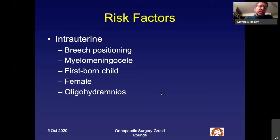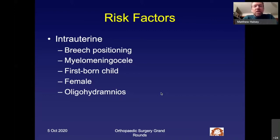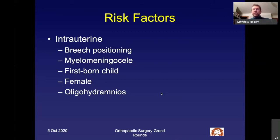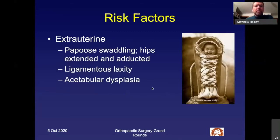Myelomeningocele can also contribute, particularly with L1, L2, or sometimes L3 levels, where you can have a dislocated hip associated with that. A firstborn child is also a risk factor, though less so than breech positioning. Female sex is a particular risk factor as well. Finally, oligohydramnios — decreased amniotic fluid causing tight packing — leads to a higher risk of DDH. Extra-uterine risk factors include ligamentous laxity as seen in Down syndrome, and some degree of acetabular dysplasia to begin with.